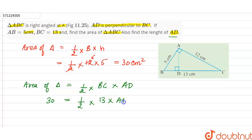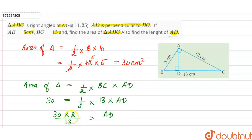So 30 centimeters square equals one half into BC, the base which is 13 centimeters, into AD. This gives us 30 equals one half into 13 into AD, so AD equals 30 into 2 divided by 13, which is 60 divided by 13.